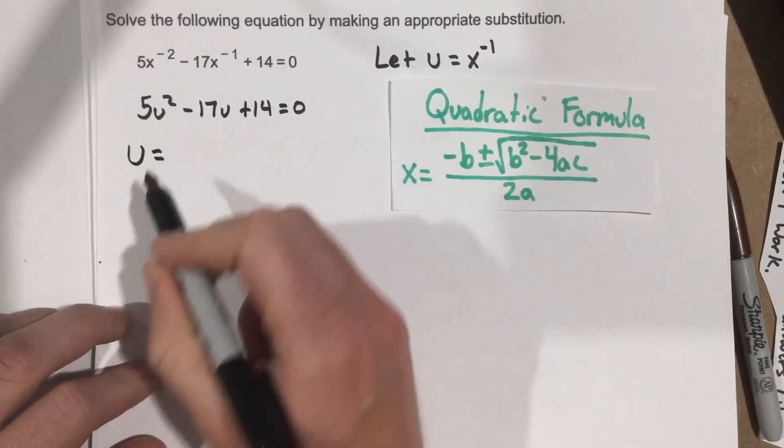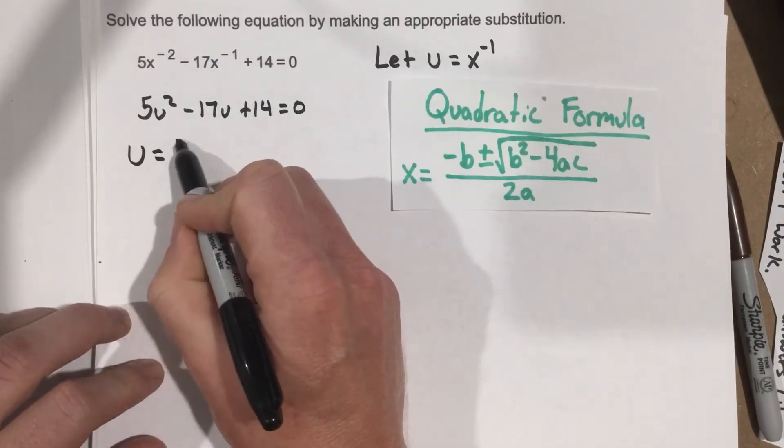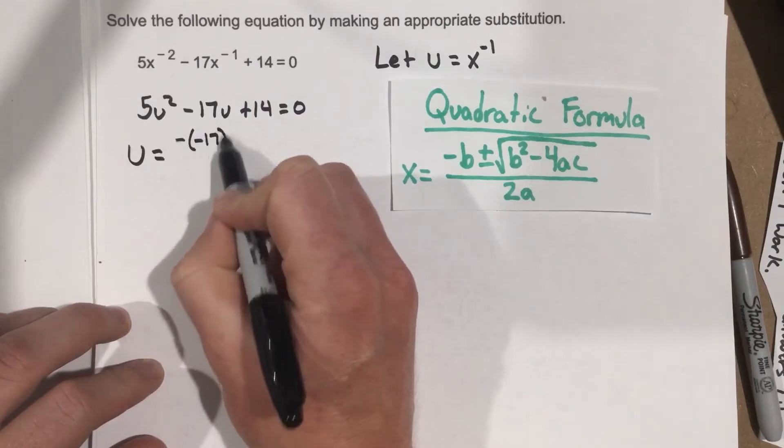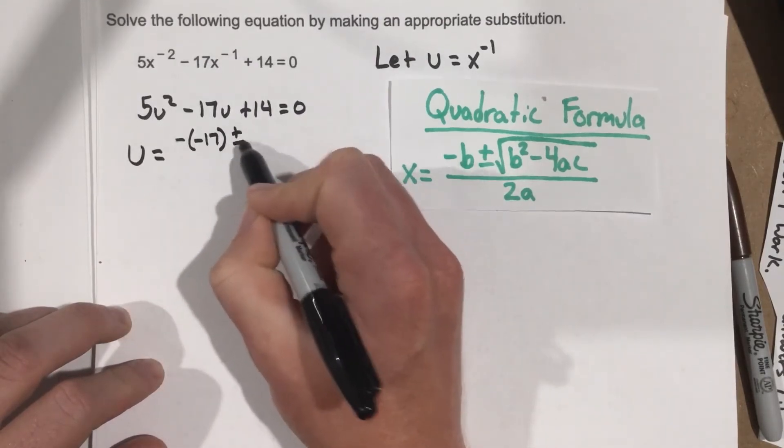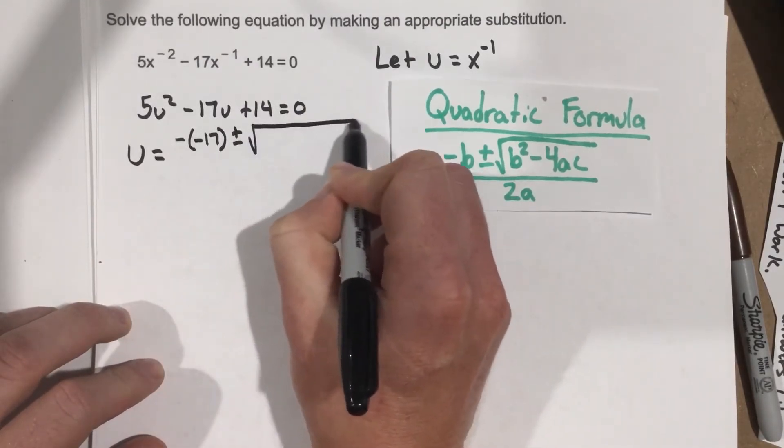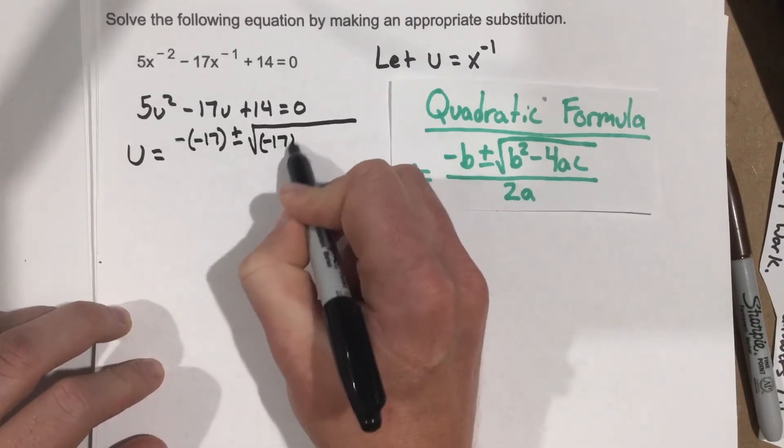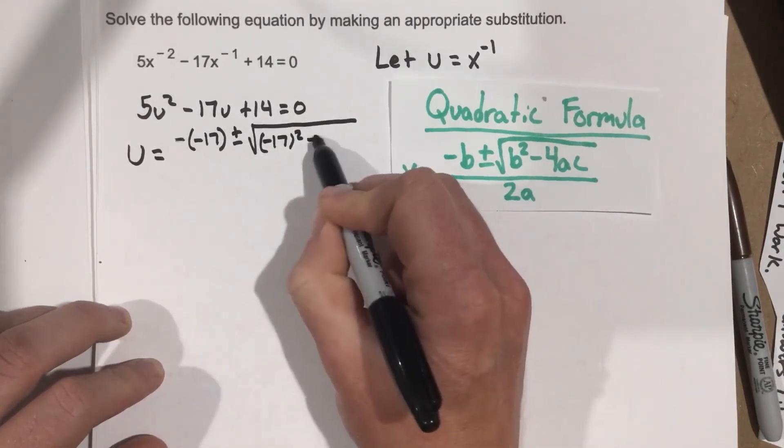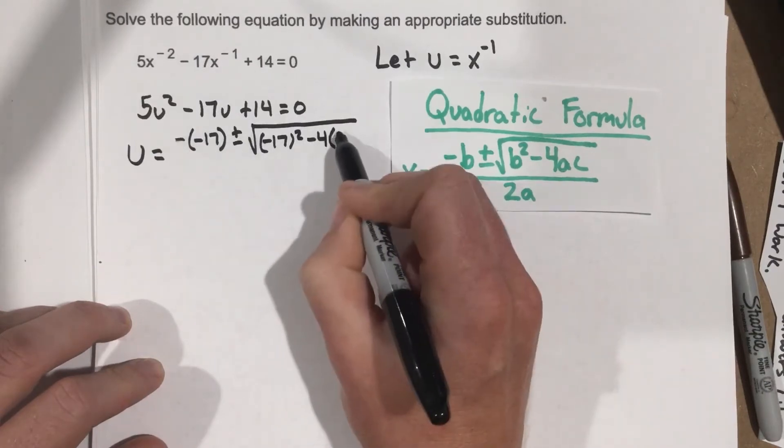So let's pull out the quadratic formula. But instead of saying x this time, we're saying u equals, and then we're going negative, negative 17, plus and minus root, negative 17 squared, minus 4 times a, which is 5,